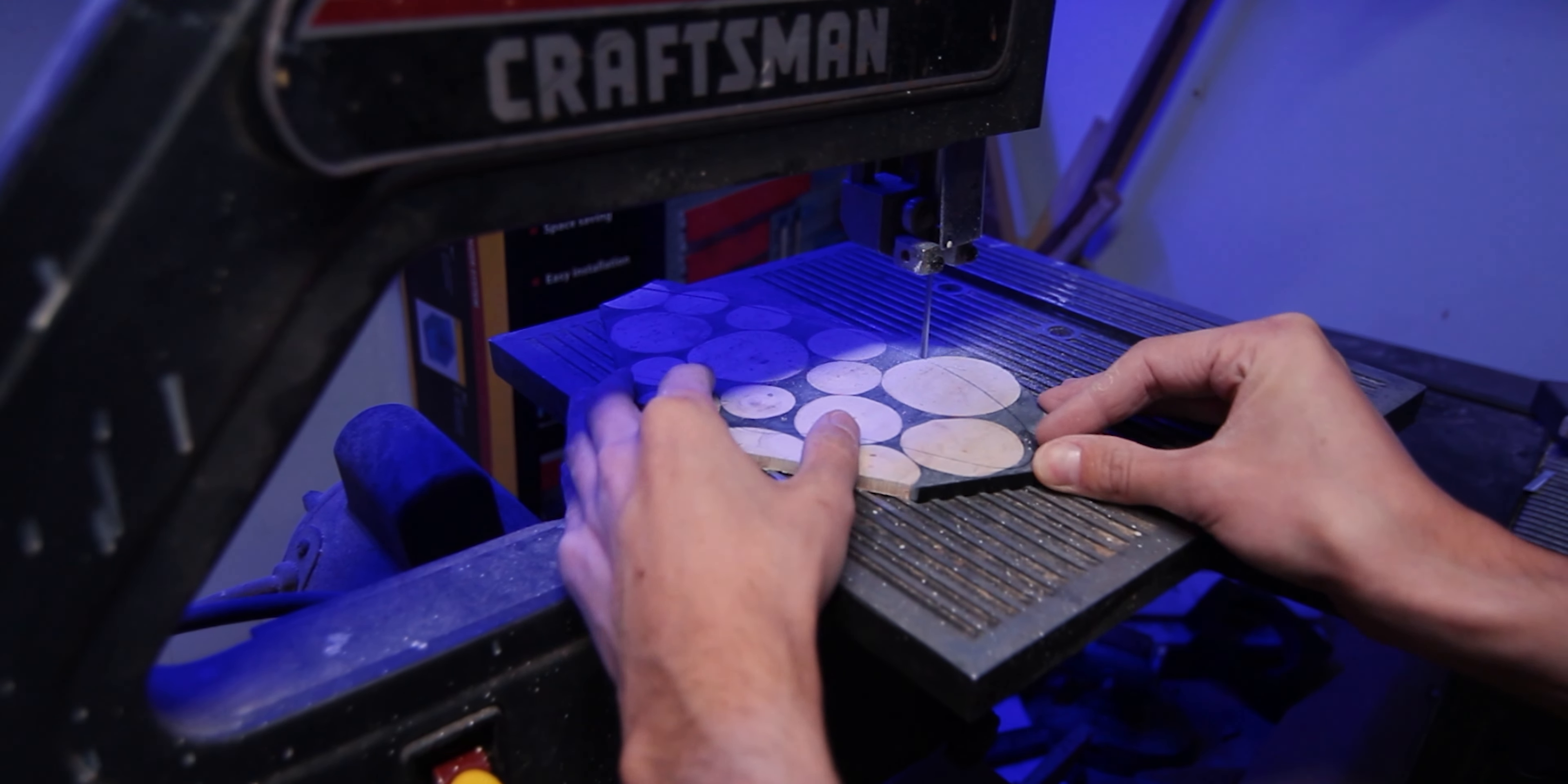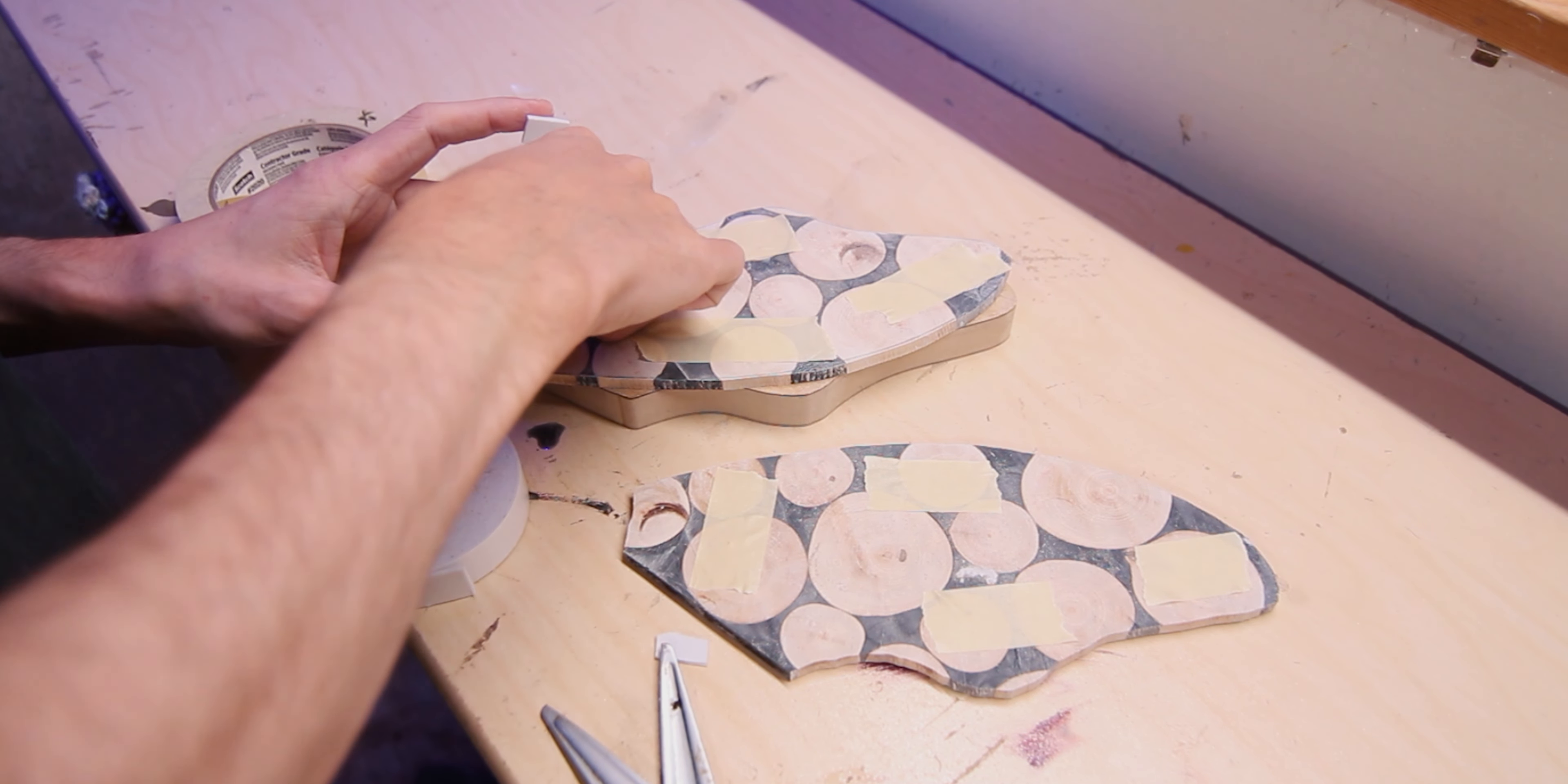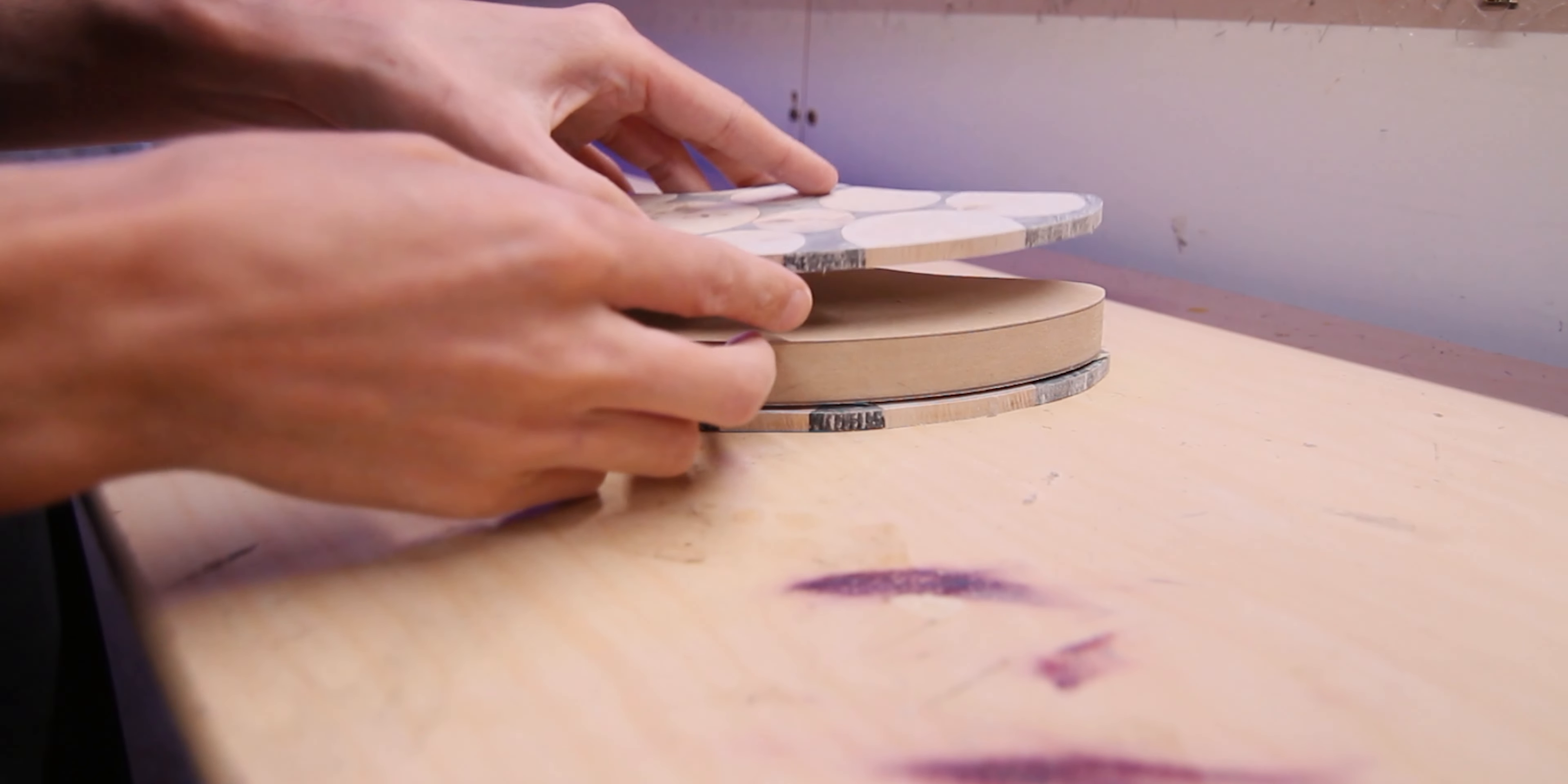With all my panels flattened out, I'm going to trace out my fin template onto each panel. I'll then take my panels over to the bandsaw and roughly cut them out, making sure that I keep each pair together.